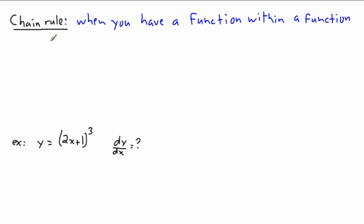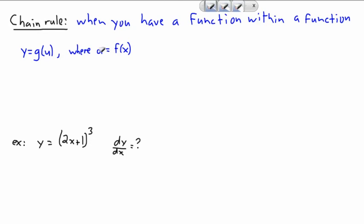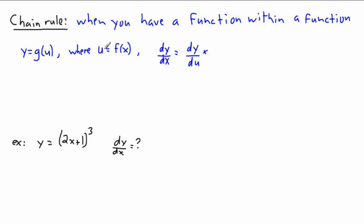The generic way to deal with chain rule uses this notation: when you have y equals g(u) — some function within another function — where u is itself a function of x, then the derivative dy/dx is equal to dy/du multiplied by du/dx. So we take the derivative of y with respect to u, and multiply that by the derivative of u with respect to x.